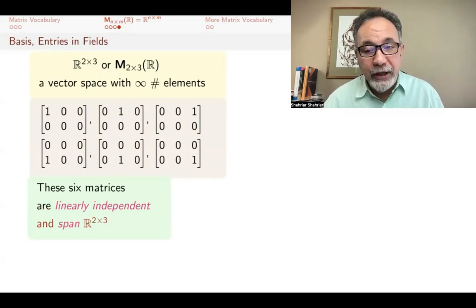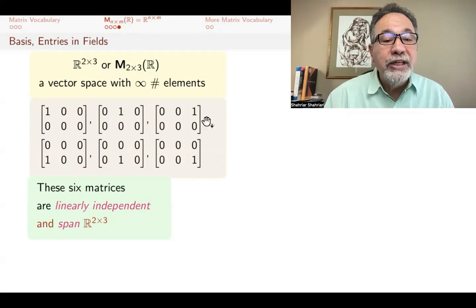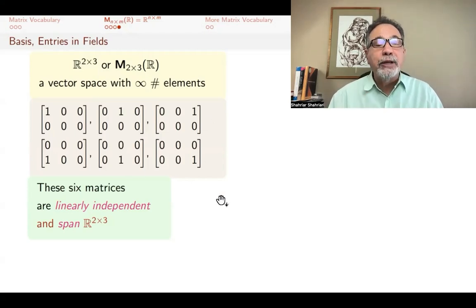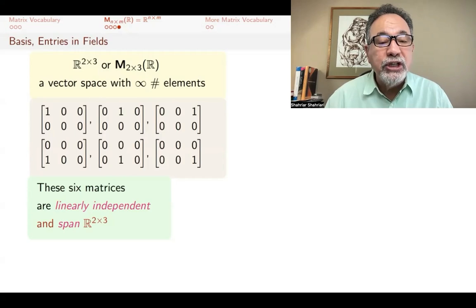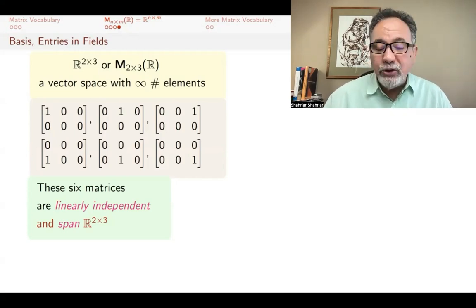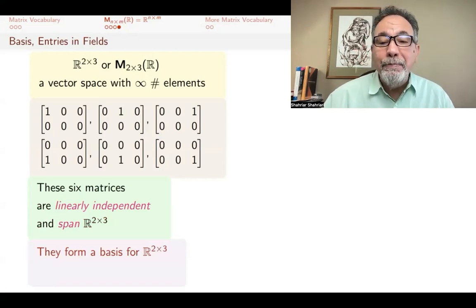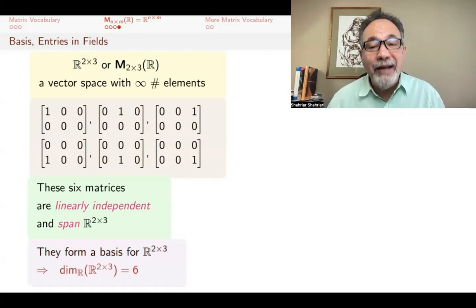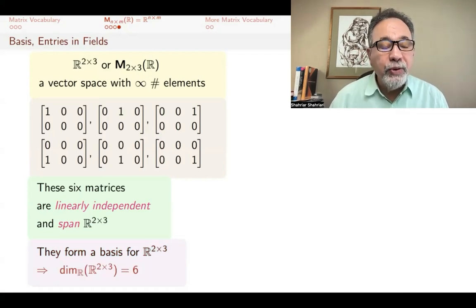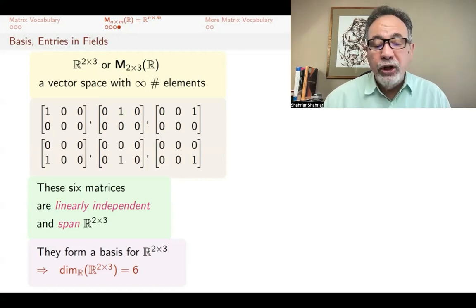And they span the world of two by three matrices. That means any two by three matrix you can get using these six matrices in those vector space operations. By multiplying these matrices by scalars and then adding them, you can get every two by three matrix. Whenever you have a linearly independent set that spans, that's called the basis. The number of elements in a basis is called the dimension of that vector space. R_{2×3} is a six-dimensional vector space, the six-dimensional world.